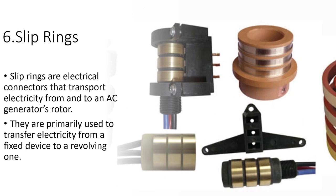Number 6: Slip Rings. Slip rings are electrical connectors that transport electricity from and to an AC generator's rotor. They are primarily used to transfer electricity from a fixed device to a revolving one.